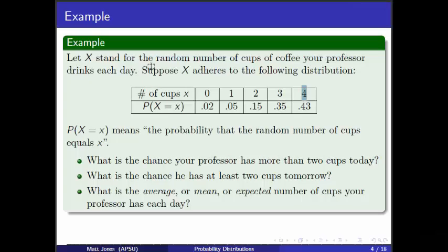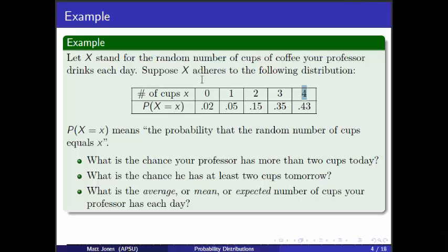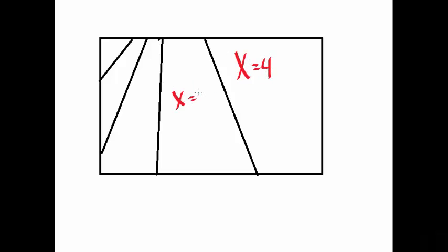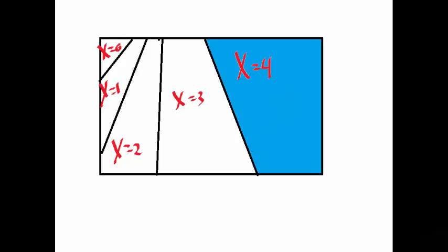If this is your Venn diagram, you have the event X = 0 over there, the event X = 1 over there, the event X = 2 a little bit bigger (15%), the event X = 3, and finally the event X = 4. You can think of the probabilities as the surface areas within each region — for example, the area of the white region represents the 2% probability that X = 0.